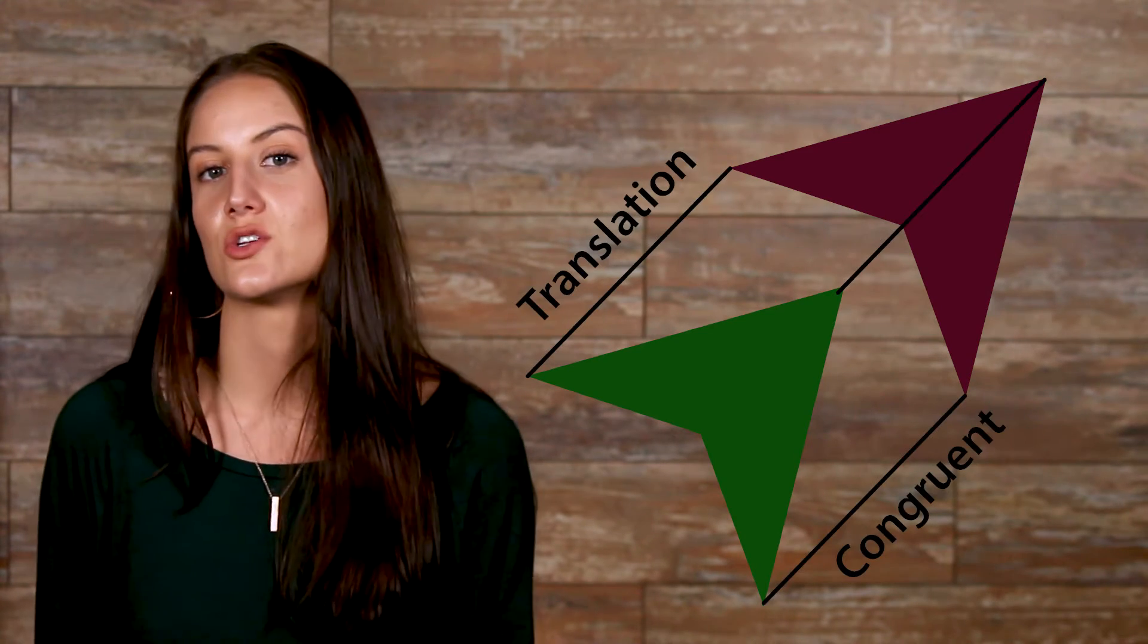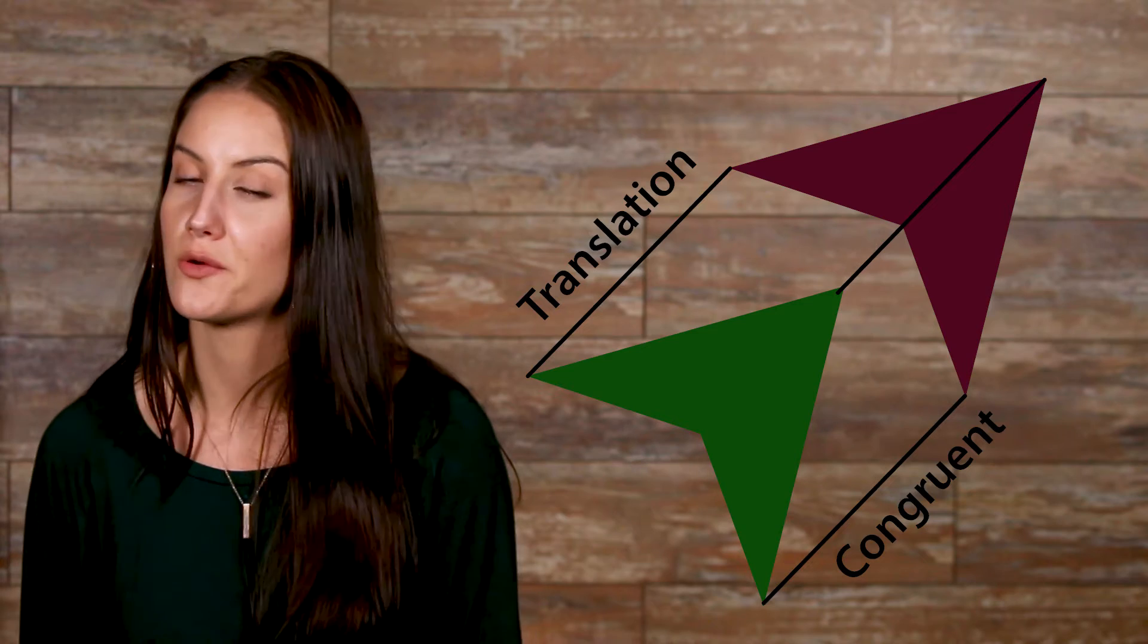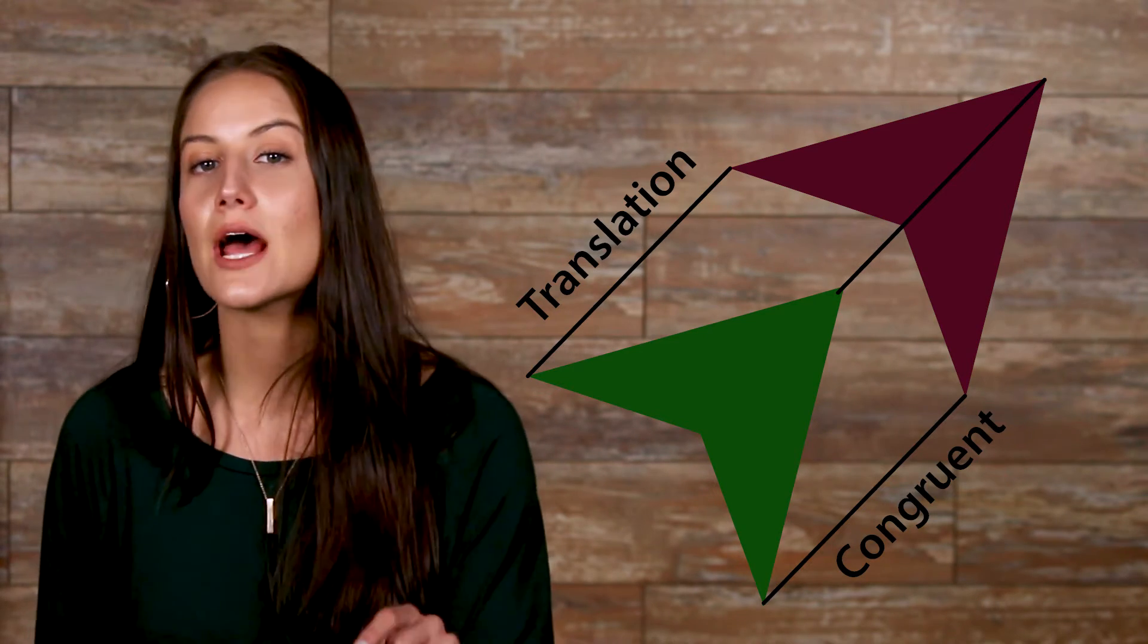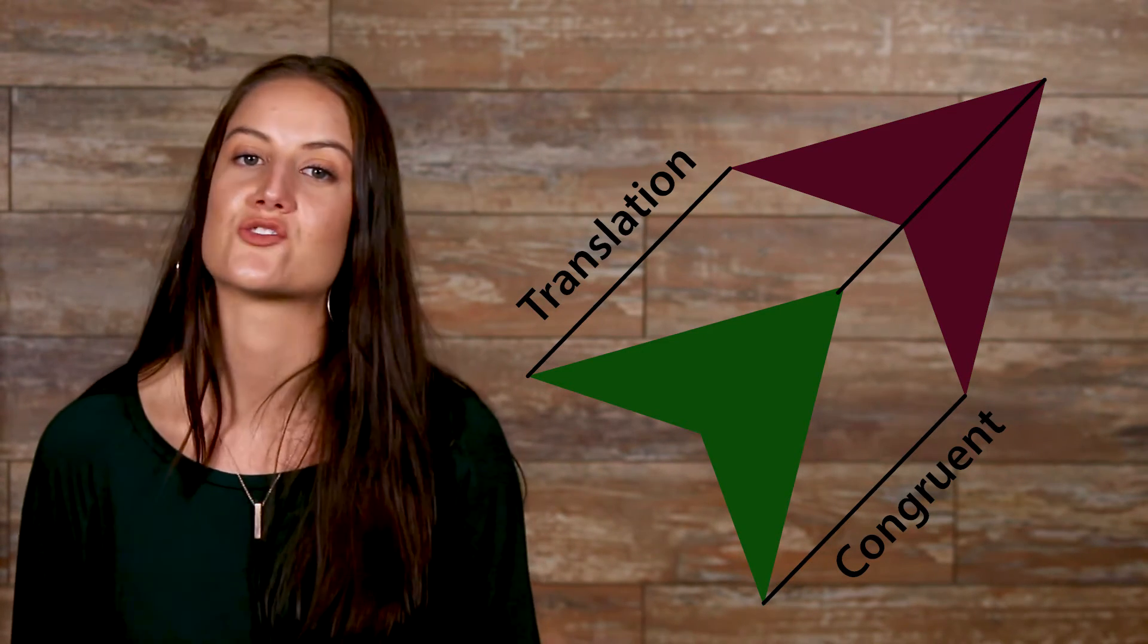These two arrows are identical in shape and size, so we know that they are congruent, however, they have been slid upwards. This movement is a translation.